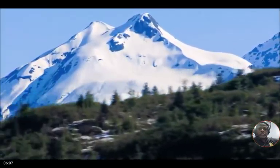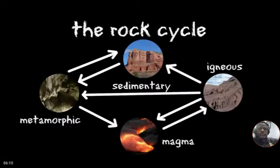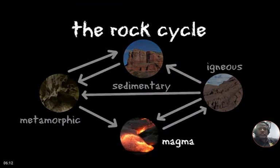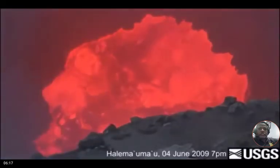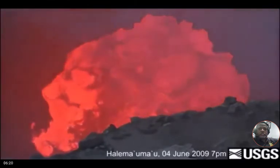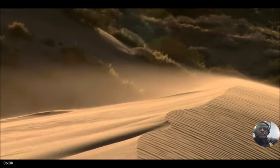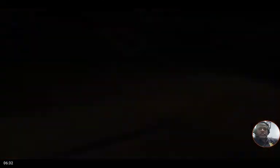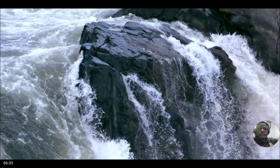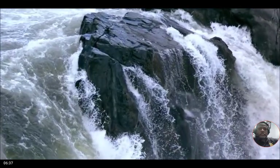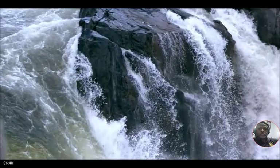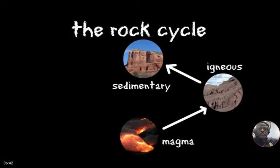Rocks are slowly but constantly changing in something known as the rock cycle. The rock cycle begins with magma — hot melted rock deep beneath the earth's surface. This magma becomes crystallized, forming igneous rock. These rocks then begin to erode or break down into small pieces because of wind, water, or other forces. The small fragments of rock are carried away as sediment when water passes over them, and are deposited in layers which eventually become sedimentary rocks.